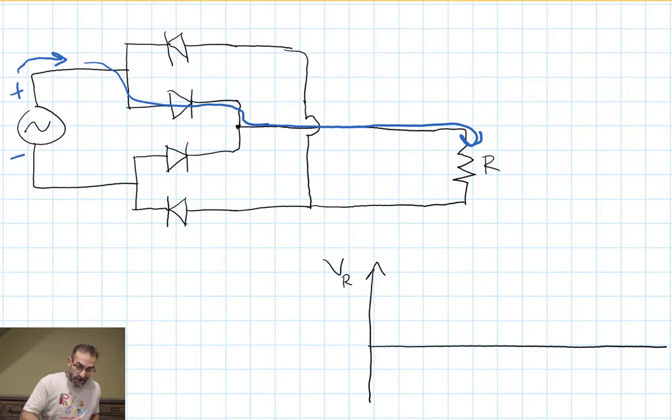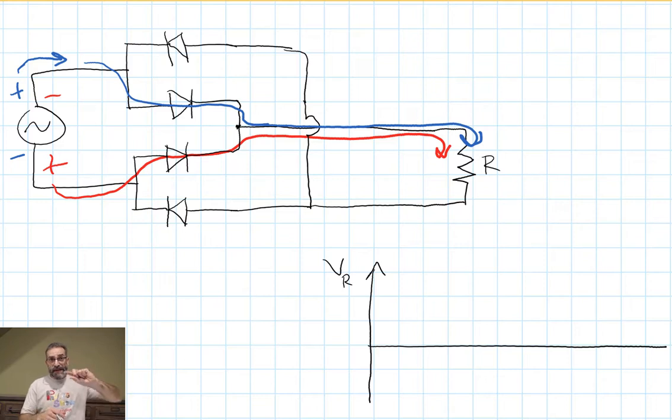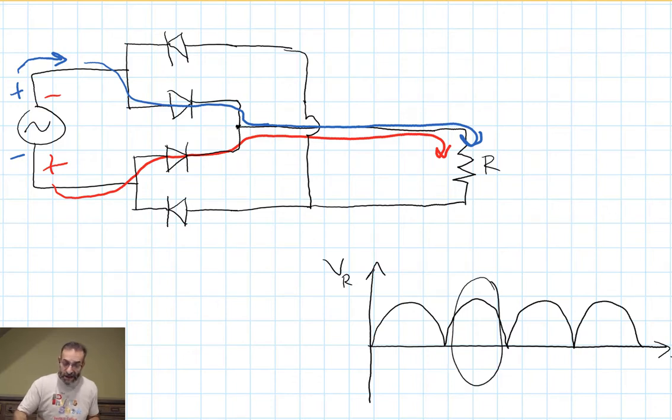When the potential flips and the bottom is higher potential than the top, current flows in the other direction, and it comes out and it comes through our resistor in the same direction. So no matter what direction the power supply is oriented, the current always goes the same direction through our resistor. The voltage across the resistor would look like this. So instead of cutting it off and losing every other half cycle, every part of the cycle is being supplied to the resistor. But these diodes ensure that the current always flows the same direction through the resistor.